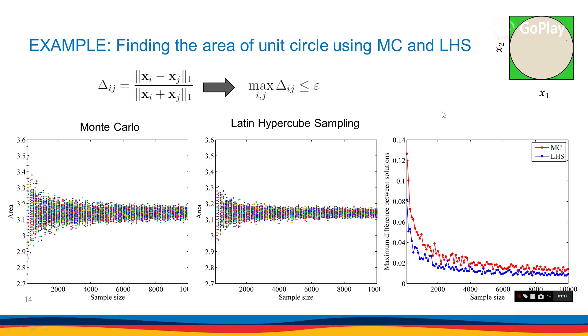Here is the maximum difference for two methods. The red one is Monte Carlo and the blue one is Latin hypercube sampling. As you can see, the blue curve is always below the red curve, which means Latin hypercube sampling can achieve better performance using the same number of samples.